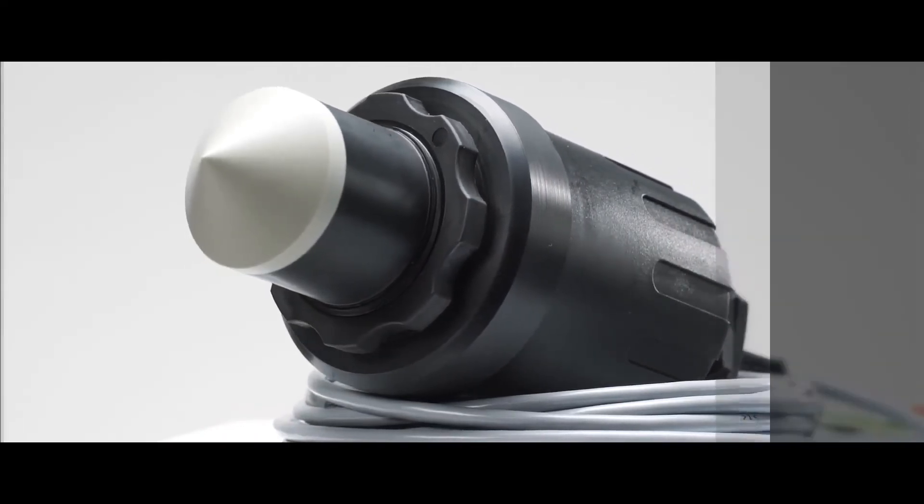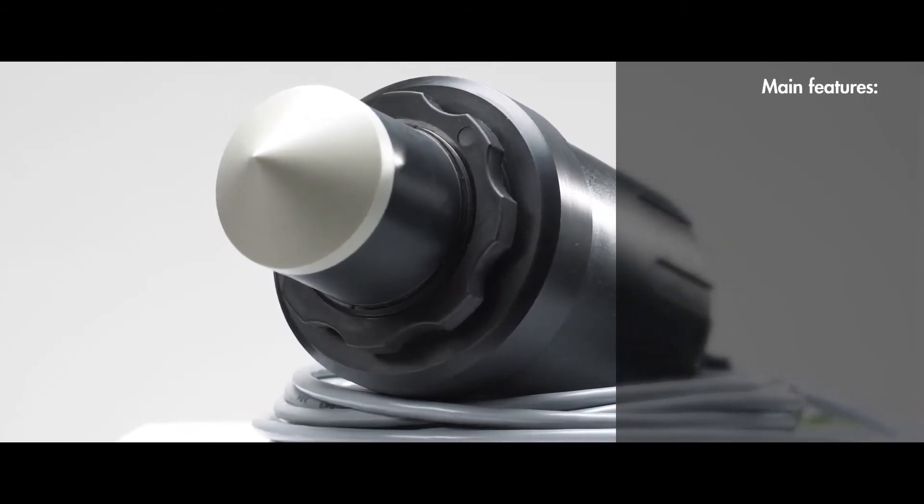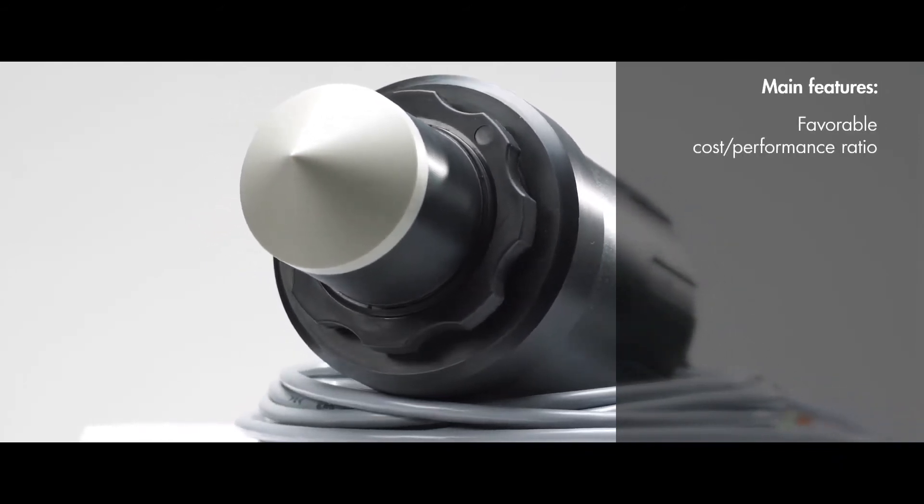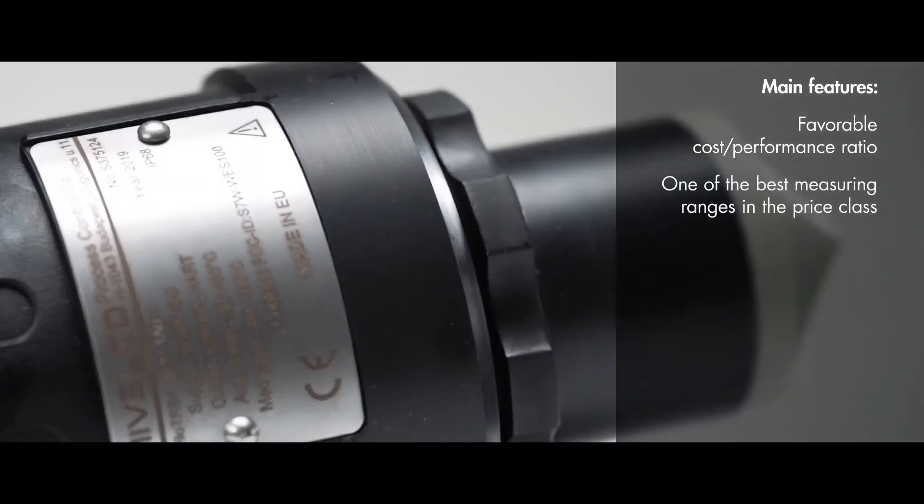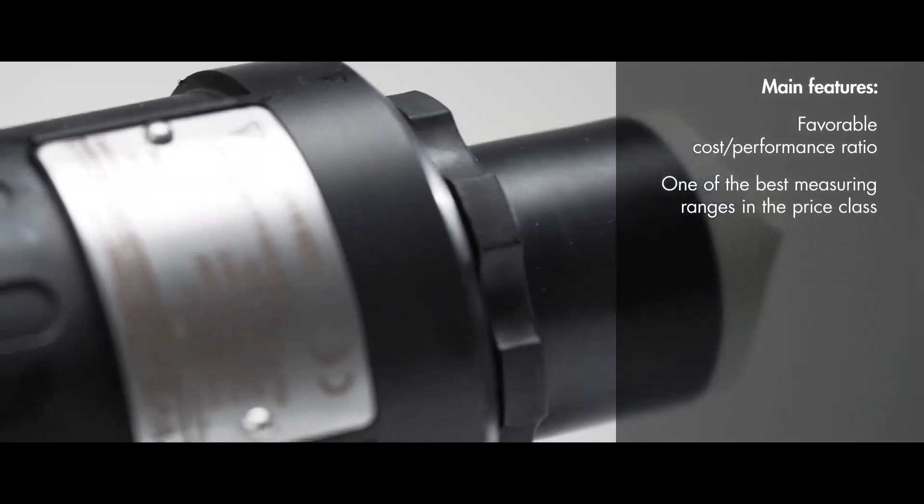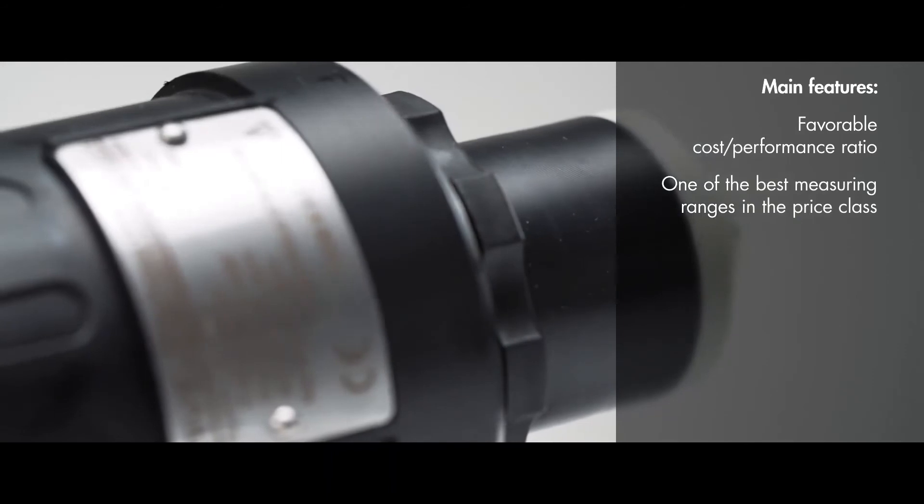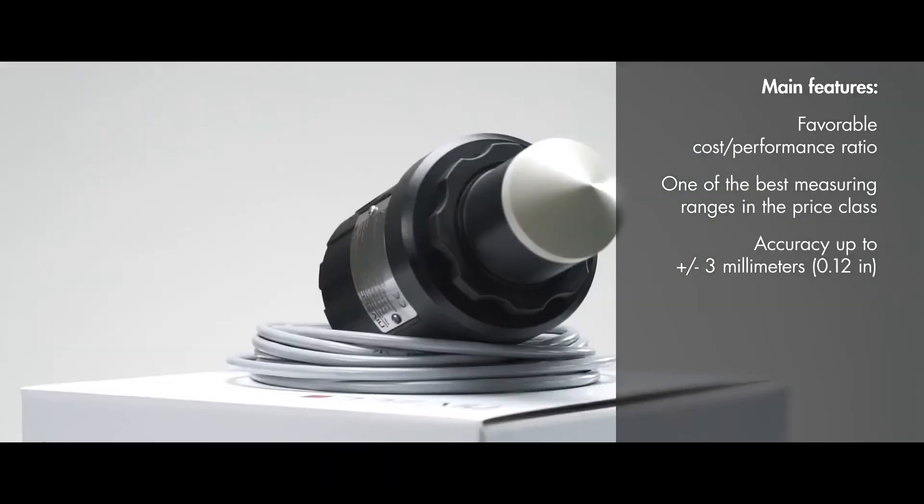The main features of Nivelco's planar antenna type PILOTREC are the following: favorable cost-performance ratio, with up to 16 meters one of the best measuring ranges in the price class, accuracy up to plus minus 3 millimeters.